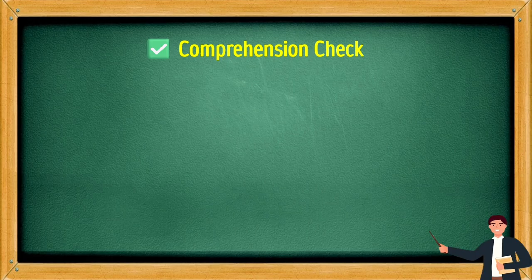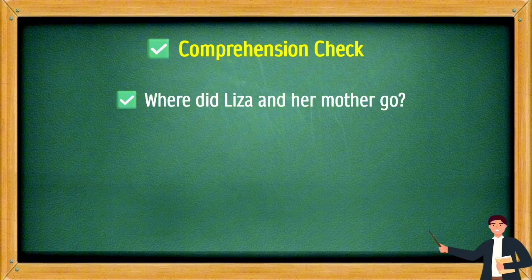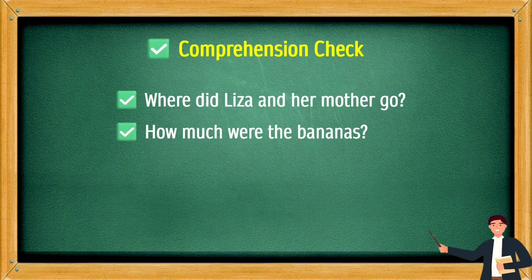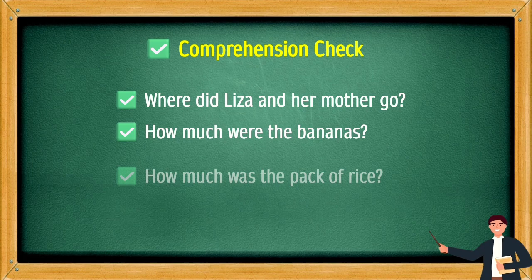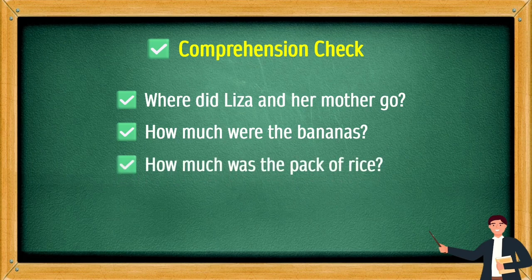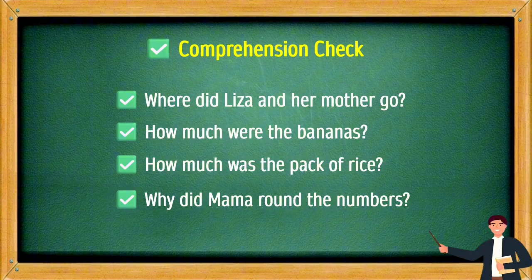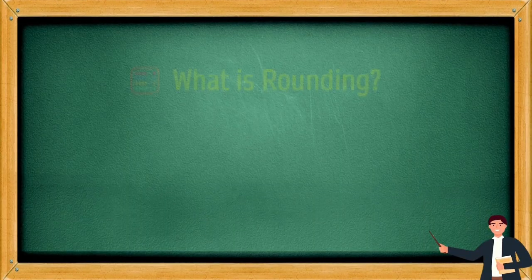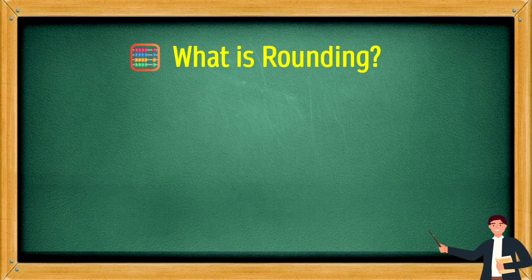Comprehension check. Where did Lisa and her mother go? How much were the bananas? How much was the pack of rice? Why did Mama round the numbers? What is rounding?